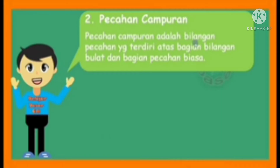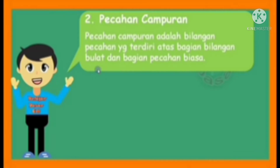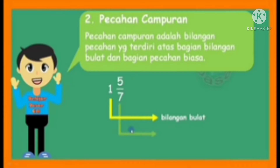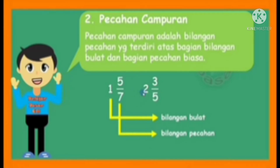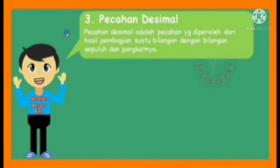Selanjutnya yang kedua ada pecahan campuran. Pecahan campuran adalah bilangan pecahan yang terdiri atas bagian bilangan bulat dan bagian pecahan biasa. Biasanya pecahan campuran diperoleh dari pecahan biasa yang pembilangnya lebih besar daripada penyebutnya. Misalkan contohnya 1 5/7: 1 itu sebagai bilangan bulat, kemudian 5/7 itu sebagai bilangan pecahan. Contoh lain: 2 3/5, terdiri dari 2 sebagai bilangan bulat dan 3/5 sebagai pecahannya.